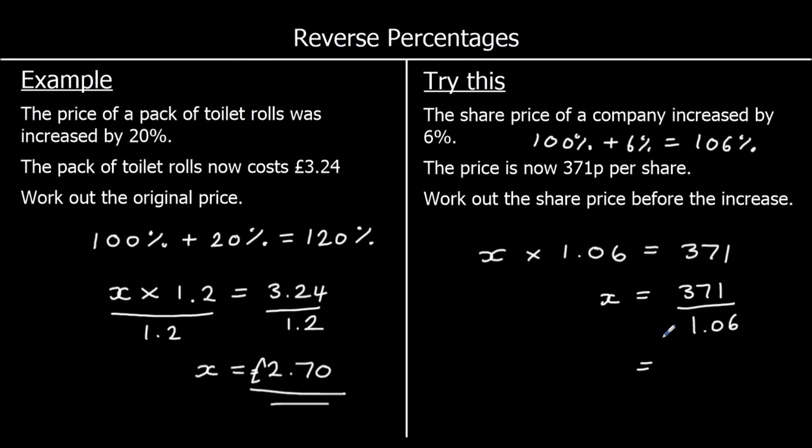So my original is 350 pence. So if I've got 350 pence and I add on 6%, I get 371 pence. If I've got £2.70 and I add on 20%, I get £3.24.